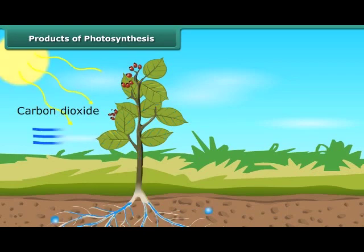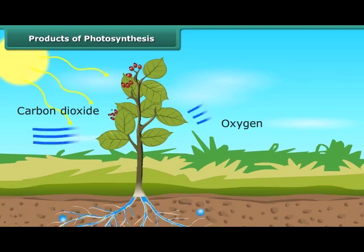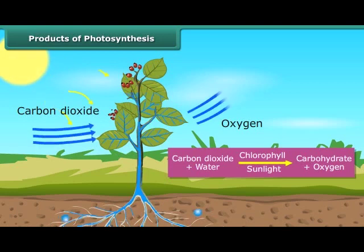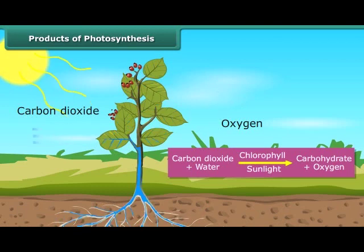Starch is also an example of a carbohydrate. In this process, oxygen is also released. Therefore, the process of photosynthesis can be represented as: carbon dioxide plus water, in the presence of chlorophyll and sunlight, gives carbohydrate plus oxygen.